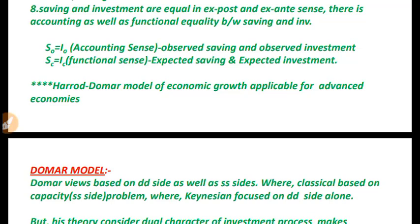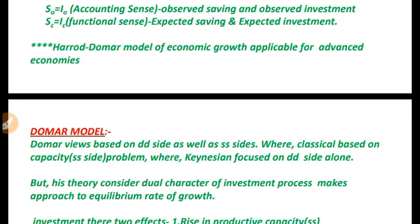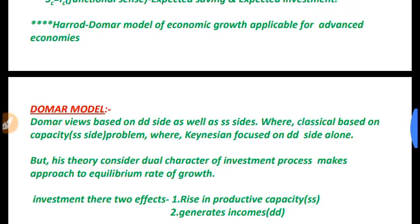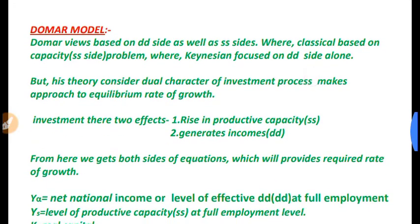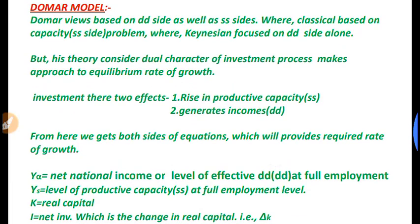In notation: S₀ = I₀ = Iₑ. This growth model is applicable for advanced economies — very important from a UGC NET point of view.